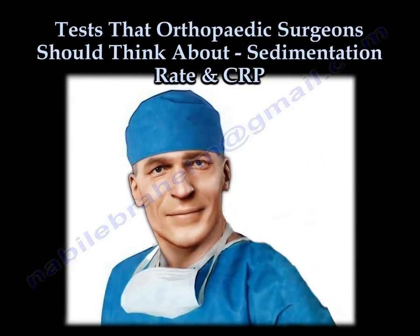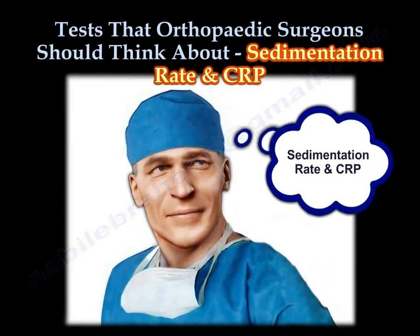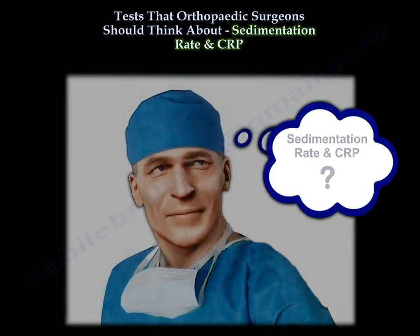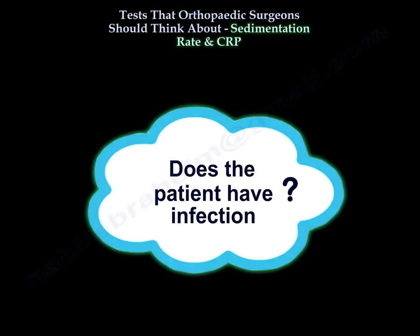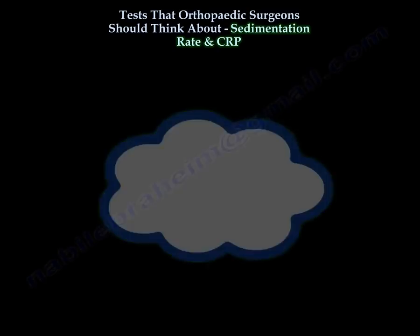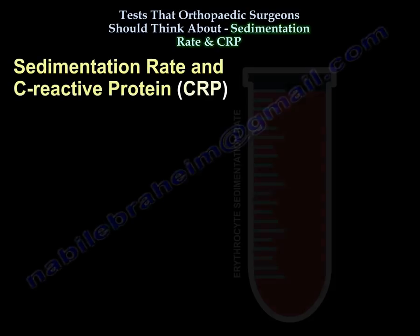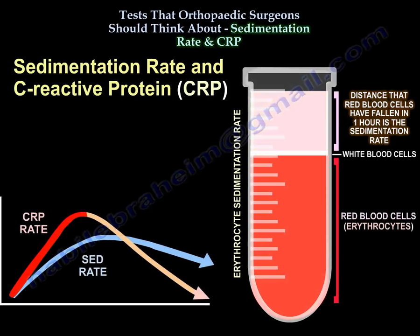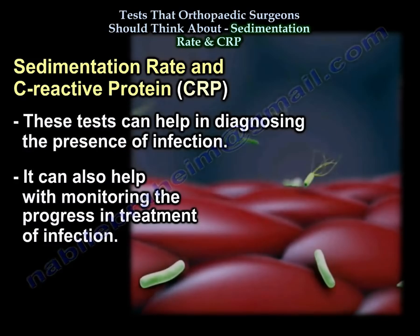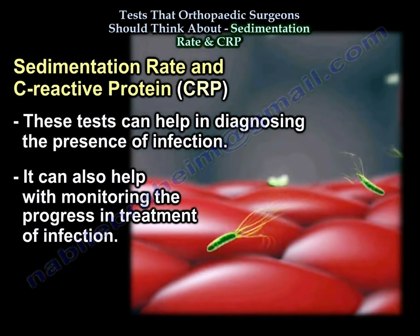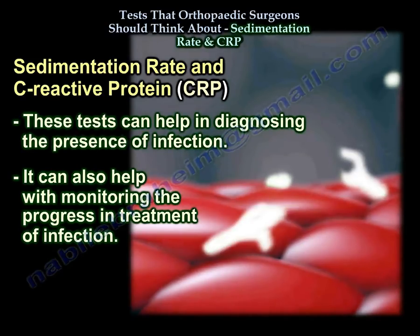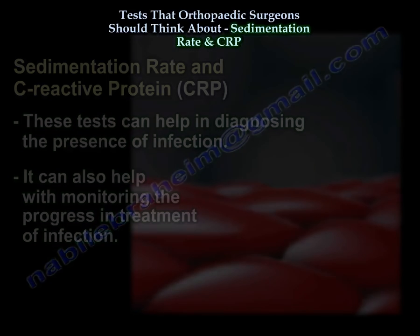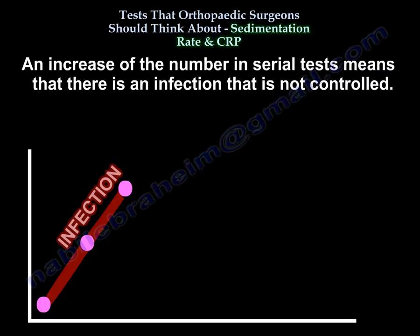Tests that orthopedic surgeons should think about: sedimentation rate and CRP. Does the patient have an infection? We frequently order sedimentation rate and CRP — C-reactive protein tests. These tests can help in diagnosing the presence of infection and also in monitoring the progress of treatment of infection.